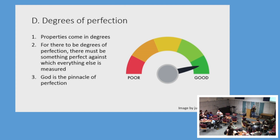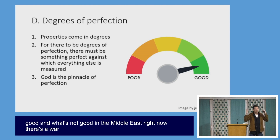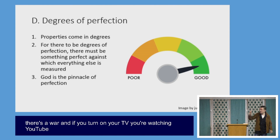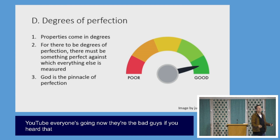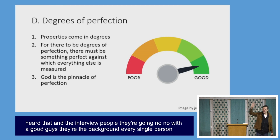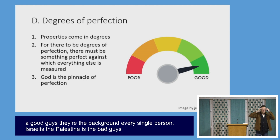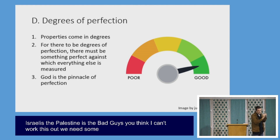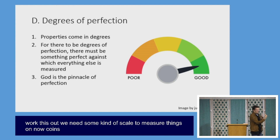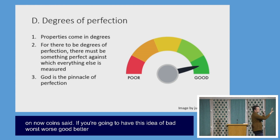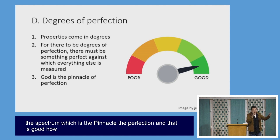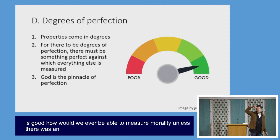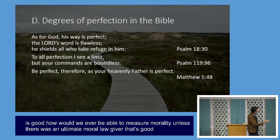In the Middle East right now there's a war, and everyone on TV says 'No, they're the bad guys!' Every single person — Israelis say the Palestinians are the bad guys, Palestinians say the Israelis are the bad guys. We need some kind of scale to measure things. Aquinas said: if you're going to have this idea of bad, worse, worst — good, better, best — there has to be something at the end of the spectrum which is the pinnacle of perfection, and that is God.